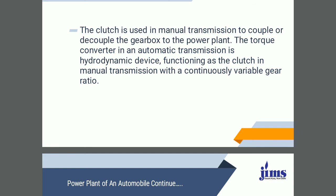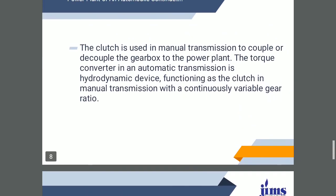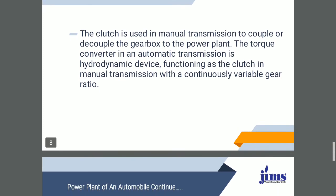What is the function of the clutch? The clutch is used in manual transmission to couple or decouple the gearbox to the power plant. The basic function of the clutch is for the engaging and disengaging of the gears. It also converts the torques. The functioning of the clutch is made with continuous variable gear ratio, as you study in the Theory of Machines — what is the gear ratio and how it works with the clutch.